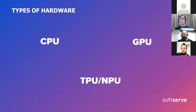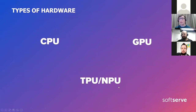There are three different types of hardware for neural network training and inference: CPU, GPU, and hardware specifically designed for neural network inference and training, like TPU from Google and different mobile neural processing units. I will mostly focus today on CPU and GPU since they are more popular, more widespread, and used in almost every device.